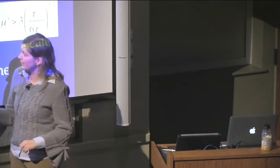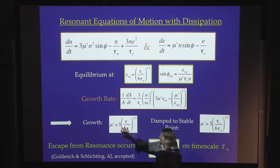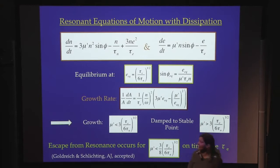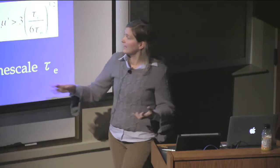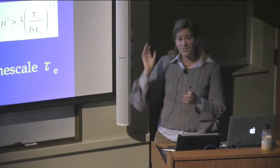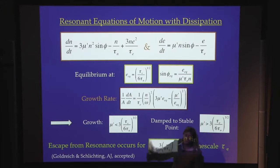For not so massive planets — if mu, the planet mass divided by the star mass, is less than the number given by the ratio of eccentricity damping timescale to migration timescale — you are caught in resonance but get overstable vibrations. Your vibrations grow until you escape the resonance. For more massive planets, you are instead damped to the stable point and just sit at this equilibrium. The growth timescale for these vibrations is given by the eccentricity damping timescale, not the migration timescale. If you have no eccentricity damping, you spend about the migration timescale in resonance. Here, to grow the vibrations, it only takes as long as the eccentricity damping timescale.